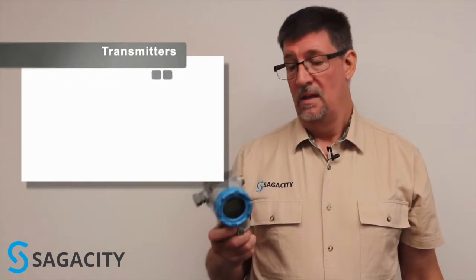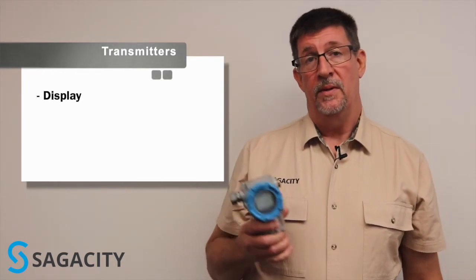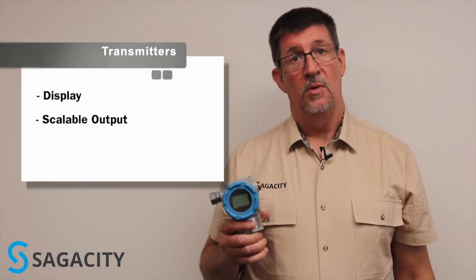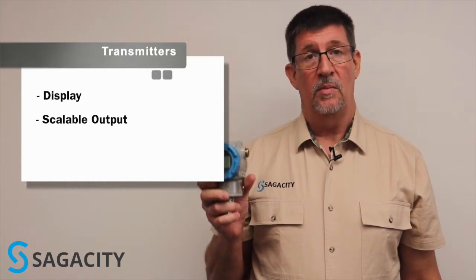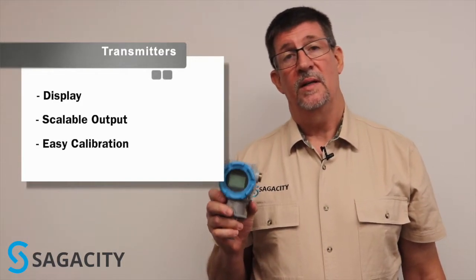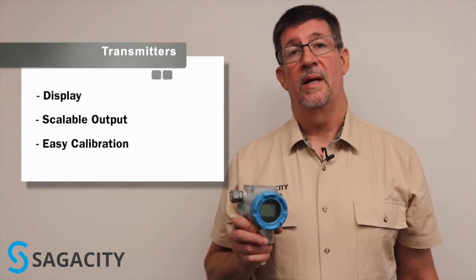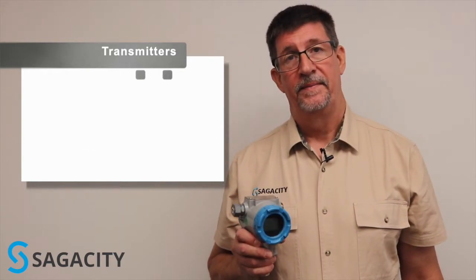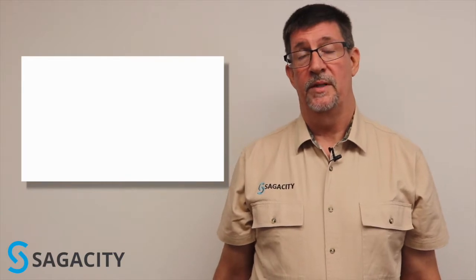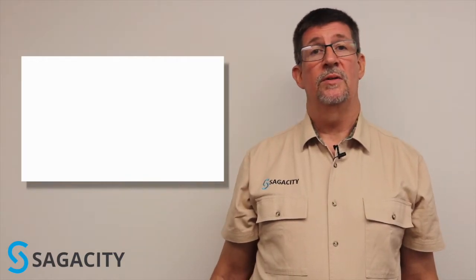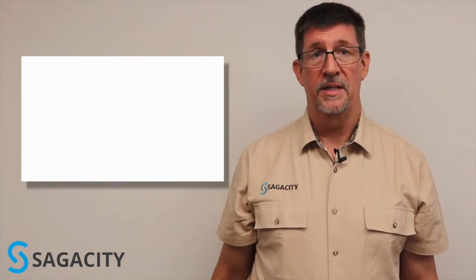Transmitters, on the other hand, typically have a display. Their output is scalable over a range and you can recalibrate these in the field typically pretty easily, versus recalibrating a transducer in the field. We're using an electronic device to measure pressure, but you need to make sure you use a transducer in the right spot and a transmitter in the right spot.